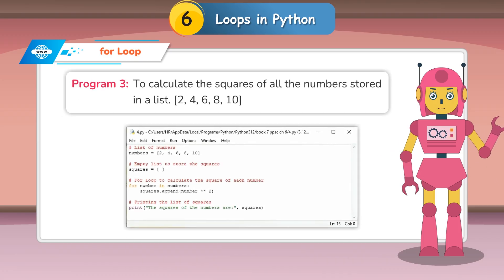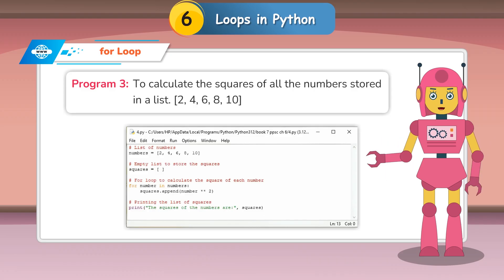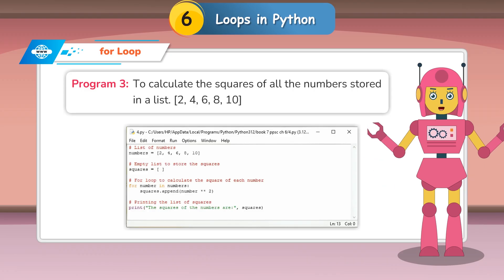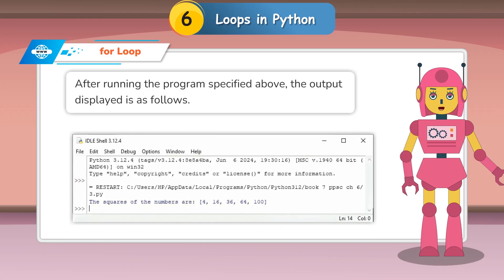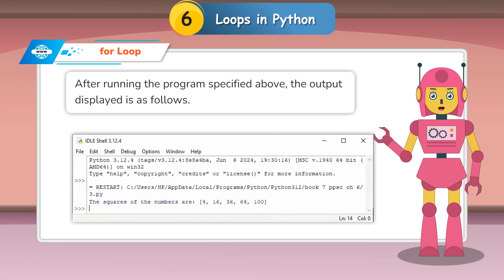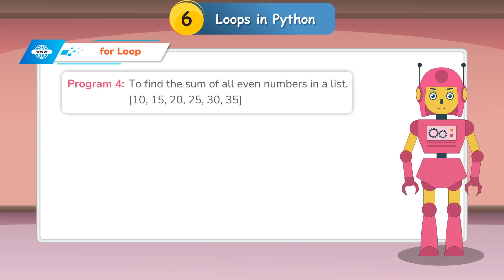Program 3: To calculate the squares of all the numbers stored in a list [2, 4, 6, 8, 10]. After running the program, the output is displayed as follows.